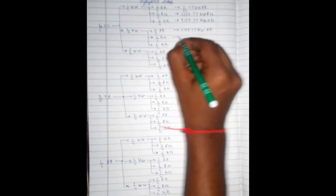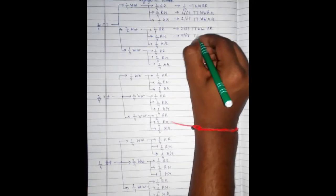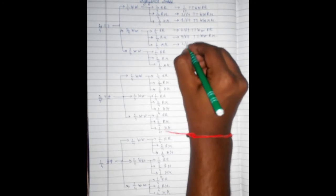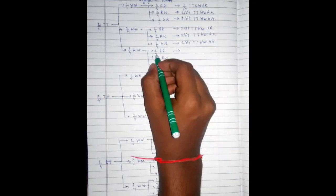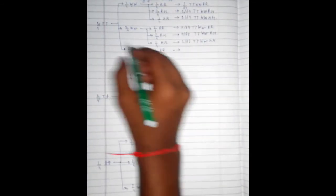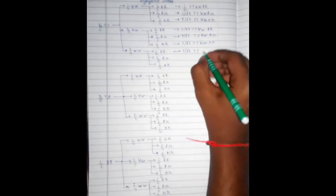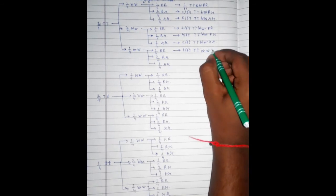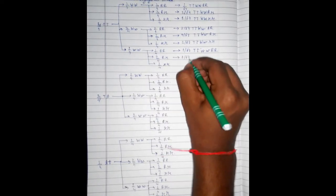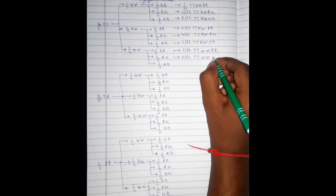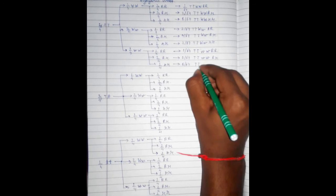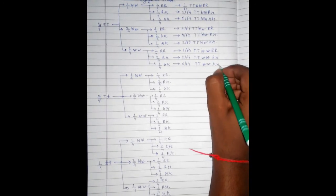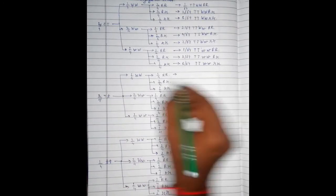Here two upon 64 for capital T capital T, capital W small w, capital R capital R. Then four upon 64 for capital T capital T, capital W small w, capital R small r. Then two upon 64 for capital T capital T, capital W small w, small r small r. Then one upon 64 for capital T capital T, small w small w, capital R capital R. Then two upon 64 for capital T capital T, small w small w, capital R small r. And one upon 64 for capital T capital T, small w small w, small r small r.